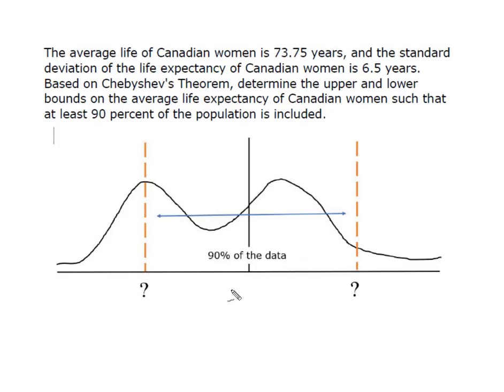So if I come back up here to my original question, right, we knew here that the mean was 73.75 years. And now what we know is that 90% of Canadian women will live between 53.2 and 94.3 years. Because what we've done is we have gone plus or minus 3.162 standard deviations above and below the mean in order to capture that 90% of our data.